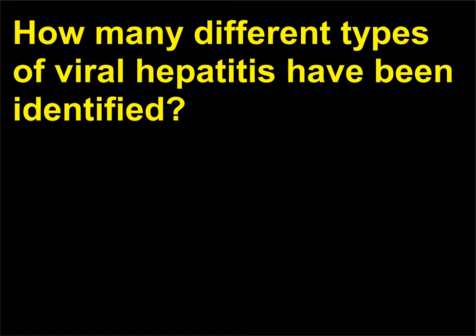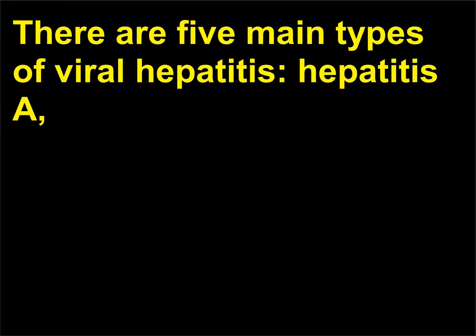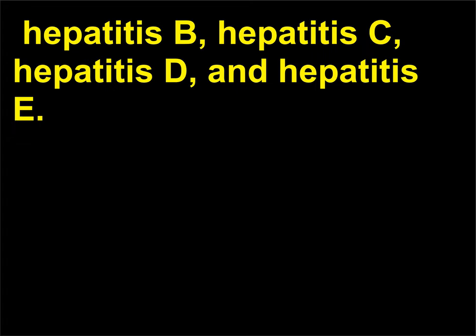How many different types of viral hepatitis have been identified? The identified types include hepatitis B, hepatitis C, hepatitis D, and hepatitis E.